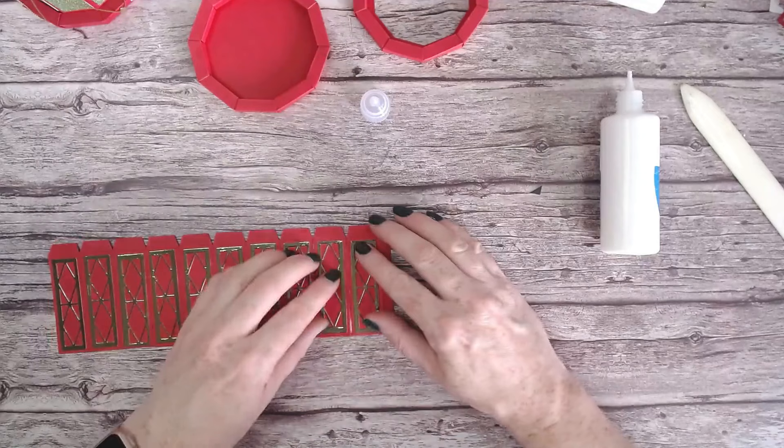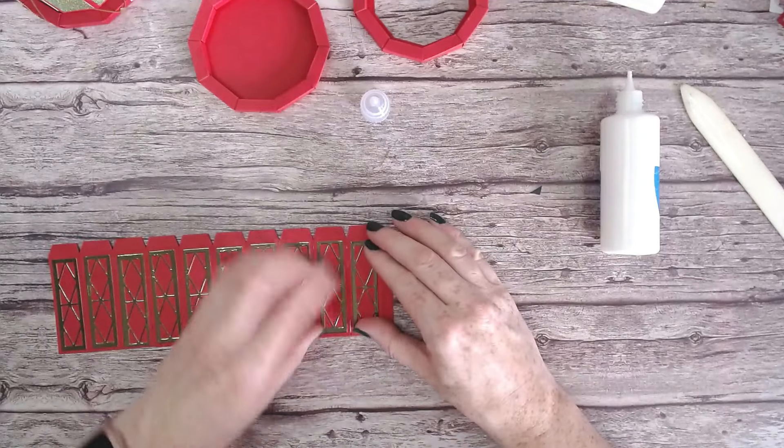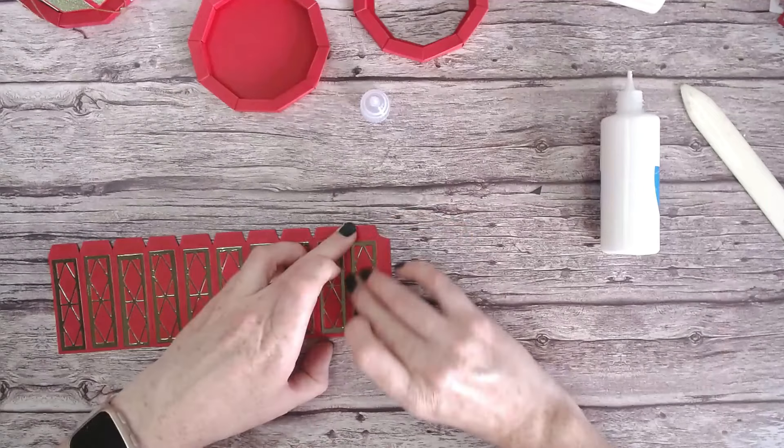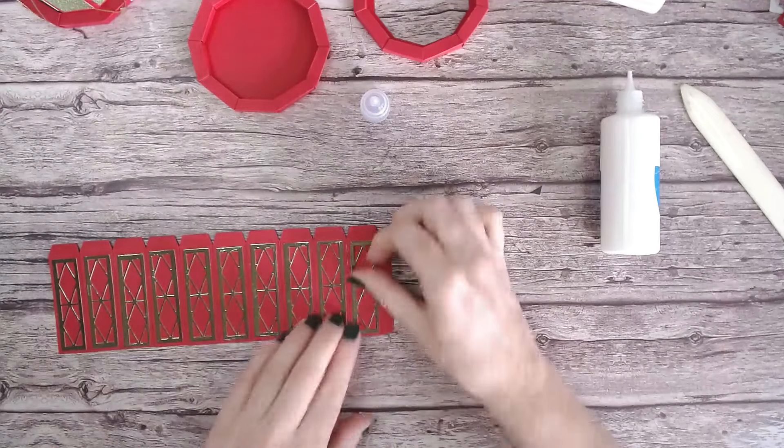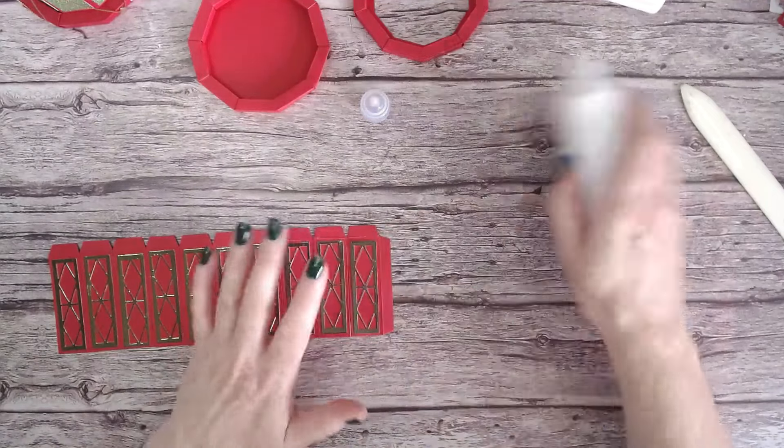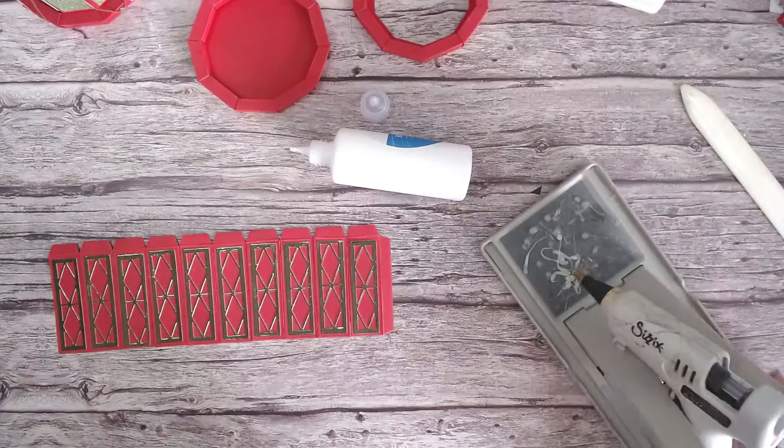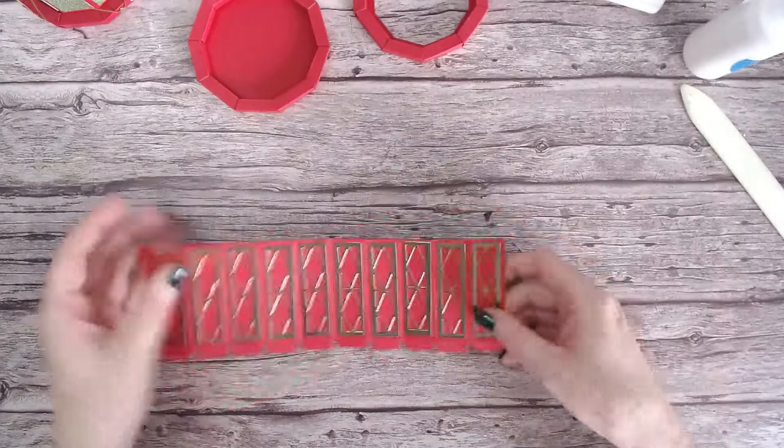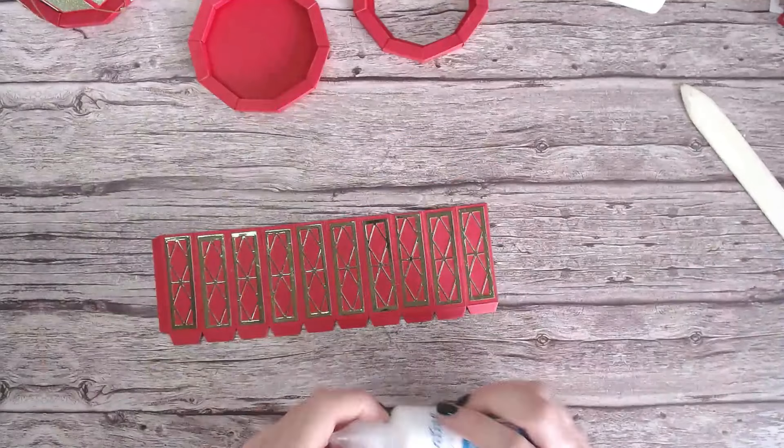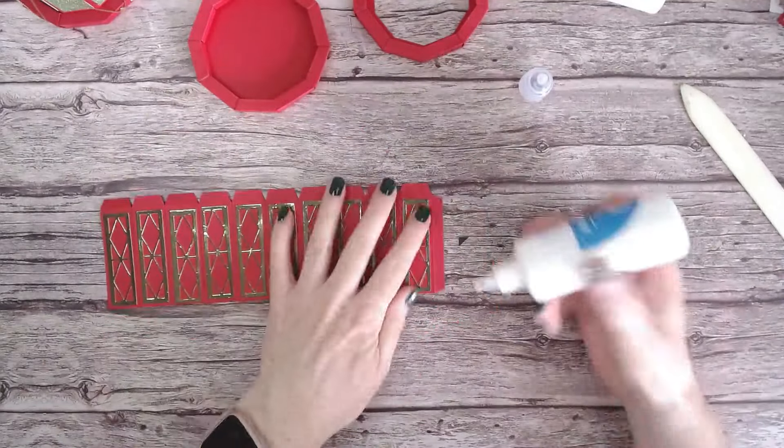Okay, so I'm just sticking on the last one and I want to give that a couple of minutes now just to dry off fully before I start to make a circle with it. In the meantime, plug in your hot glue gun and get that heating up. Okay, so that's had a few minutes to dry. Let's get that glued together.